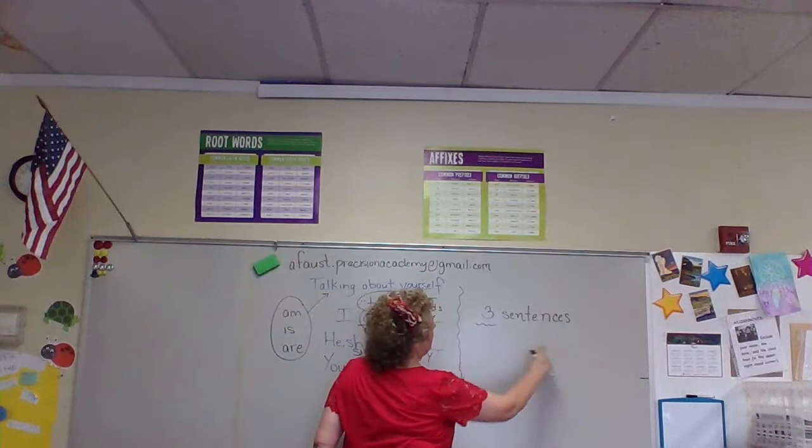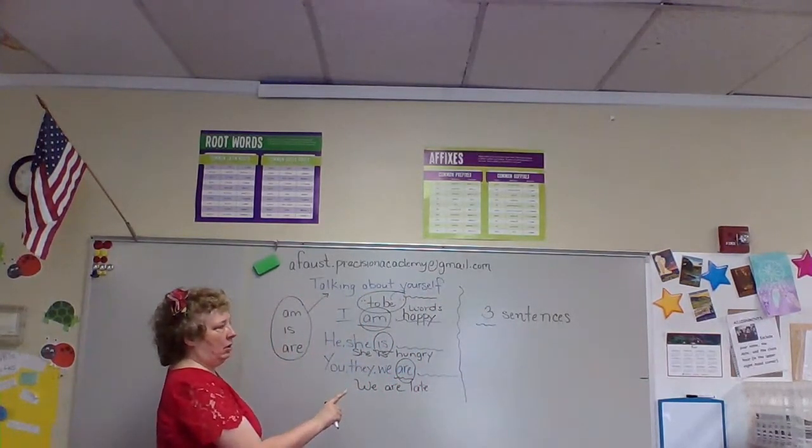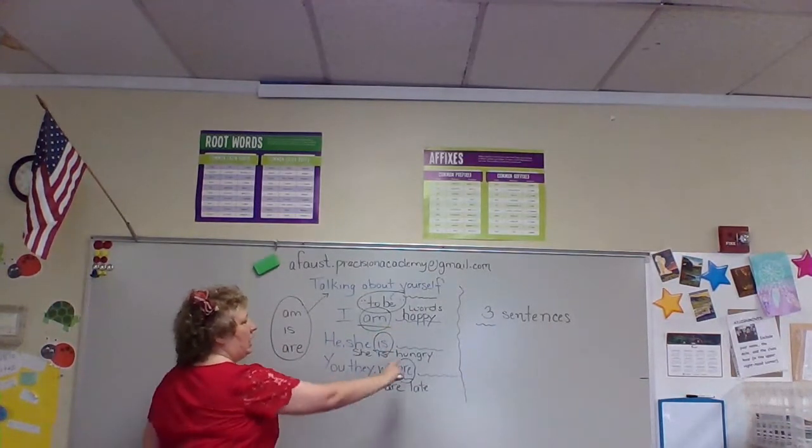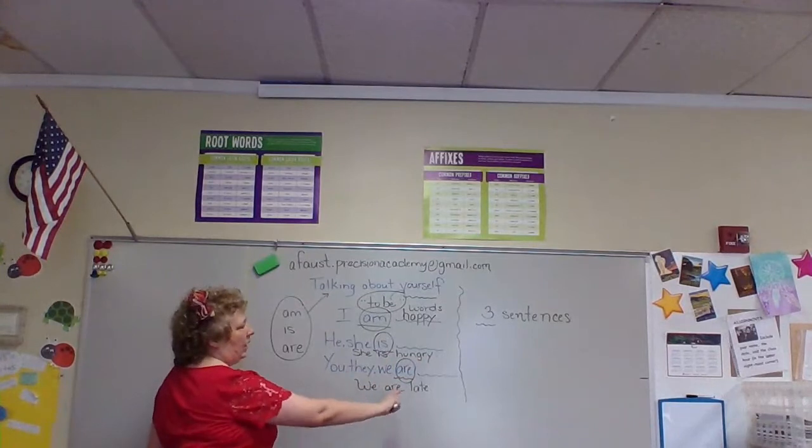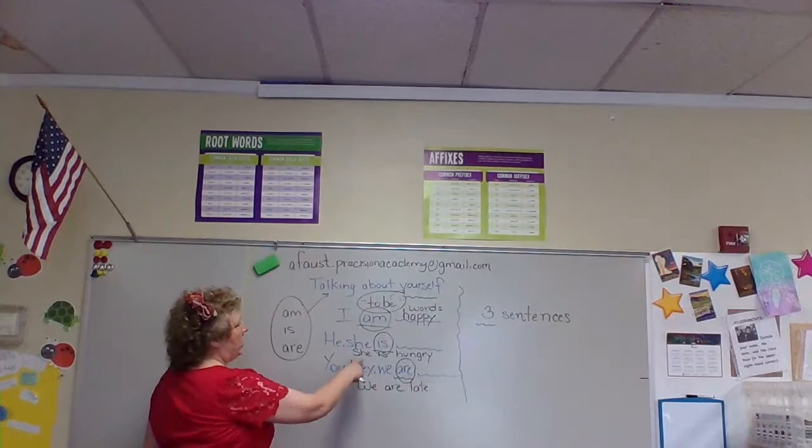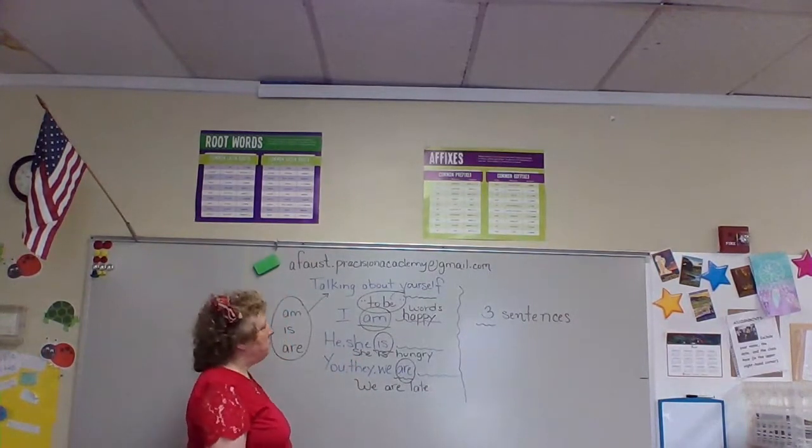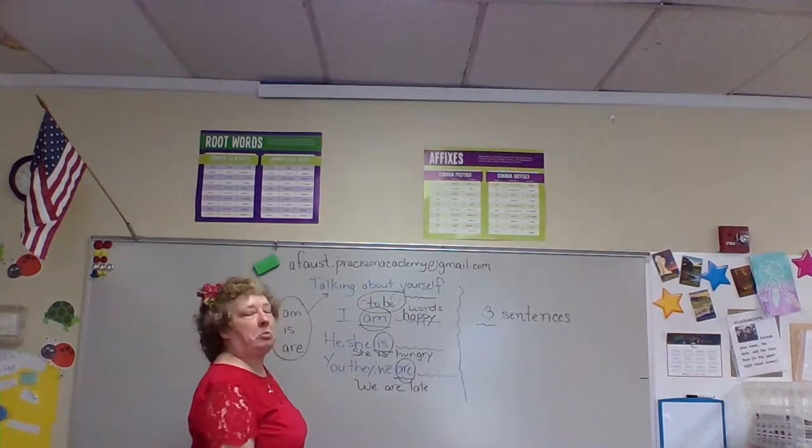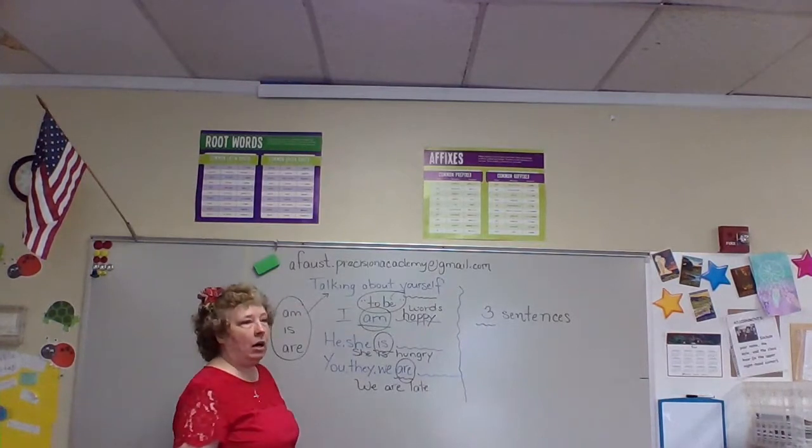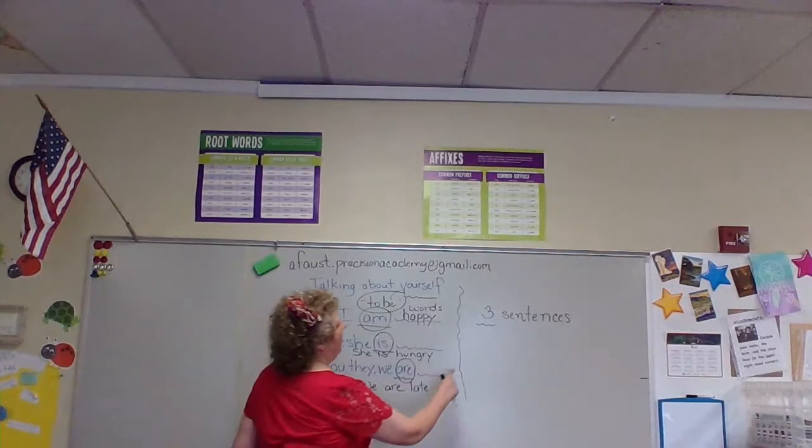I want you to come up with three sentences using the to be words. Look at my examples. I am happy. She is hungry. We are late. You can do that. Something very similar. You can decide, I'll write, Annie is tired. They are early. However you want. But I'd like to have three sentences.